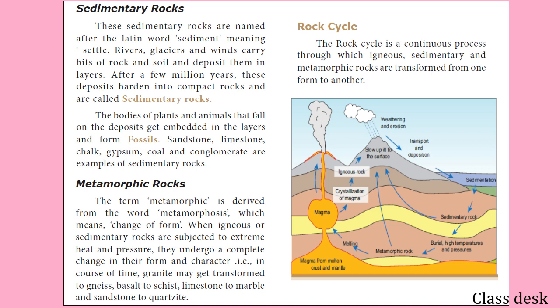Now we have metamorphic rock. Metamorphic means change of state. When igneous or sedimentary rock is subjected to high heat and pressure, it is changed into metamorphic rock. For example, granite under high pressure becomes gneiss; basalt becomes schist; limestone becomes marble; and sandstone becomes quartzite.